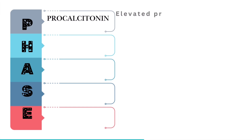P is for procalcitonin. Procalcitonin is primarily elevated in bacterial infections, though the exact mechanism remains unclear.